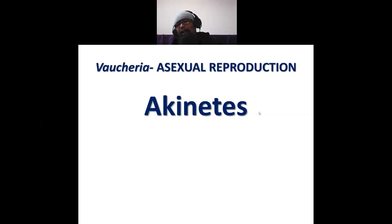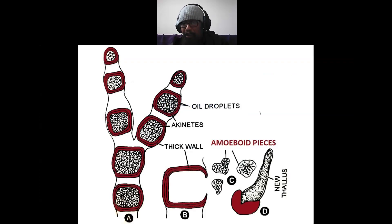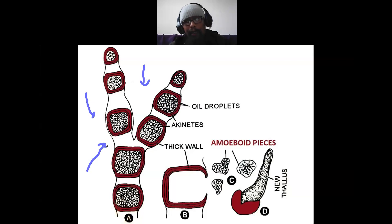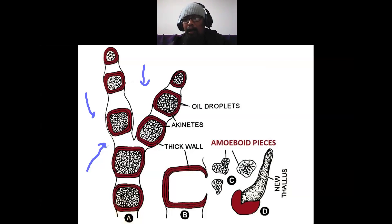Finally, akinetes. These are formed in aquatic species as well as in terrestrial species under extreme environmental conditions — meaning when there is a drought-like situation. Thin-walled structures cannot survive under such conditions. For that purpose, akinetes are formed, which are very thick-walled structures. Whenever Vaucheria species face a drought-like situation, they receive a biological message, and then the protoplast breaks into many pieces.